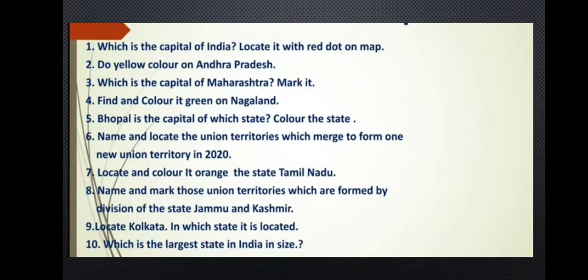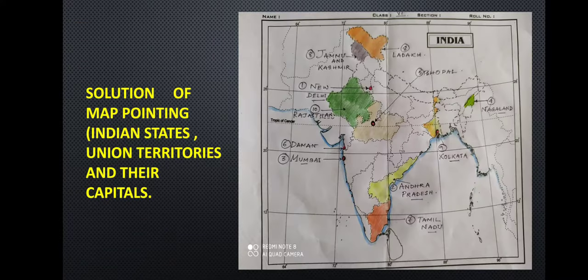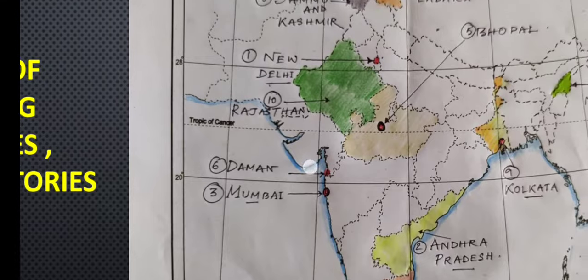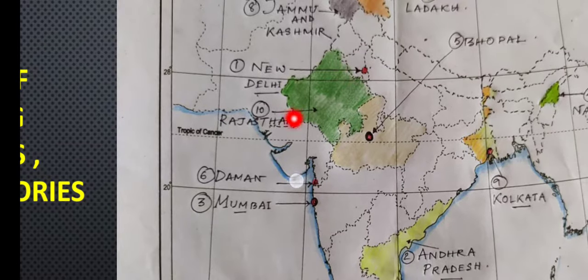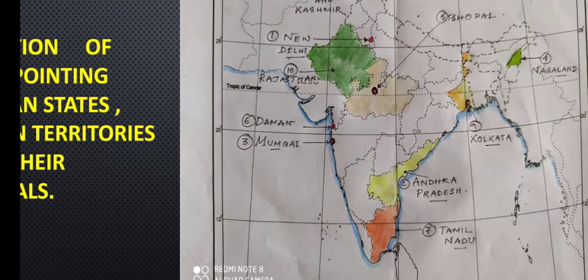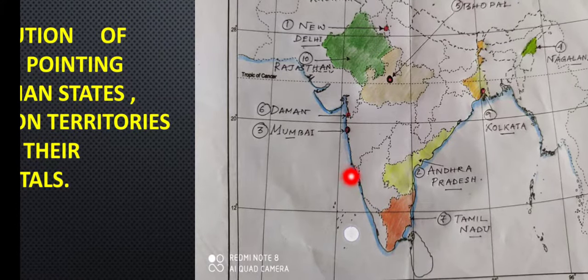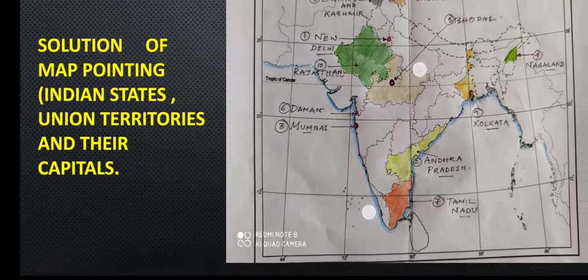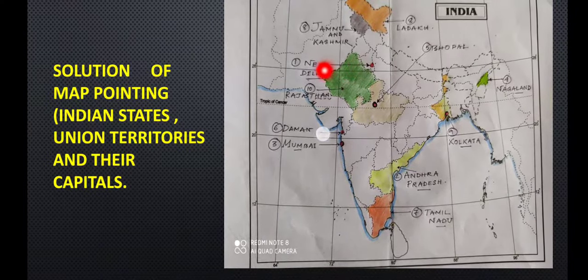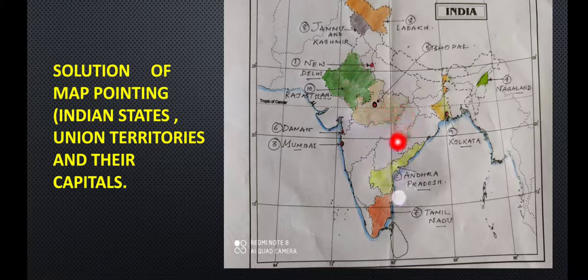The last question: which is the largest state in India in size or area? In terms of area, at present Rajasthan is the largest state — I have colored it. The smallest state is Goa, which you can practice also. Previously the largest state was Madhya Pradesh, but after Madhya Pradesh was divided into Madhya Pradesh and Chhattisgarh, Rajasthan became the largest state in terms of area.